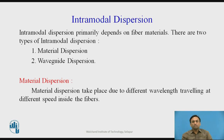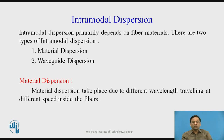Intramodal dispersion primarily depends on the fiber materials. The fiber materials used for manufacturing are silica (SiO2) and OH bonds. Depending on the fiber material, there are two types of intramodal dispersion: material dispersion and waveguide dispersion. Material dispersion takes place due to different wavelengths traveling at different speeds inside the fiber, which depends on the velocity of light traveling inside the core. As in step-index and graded-index fibers, the refractive index changes in graded-index, so different wavelengths travel at different speeds inside the fiber.